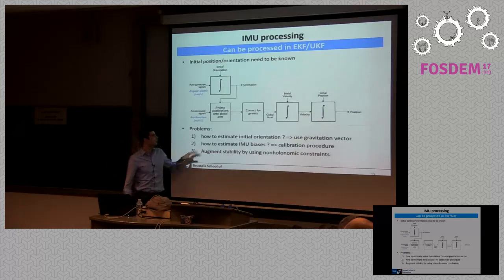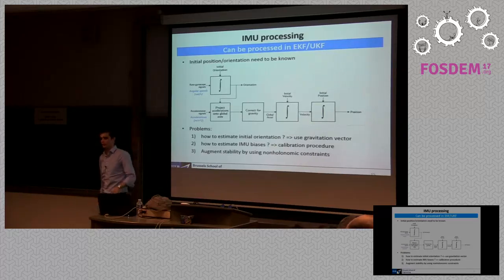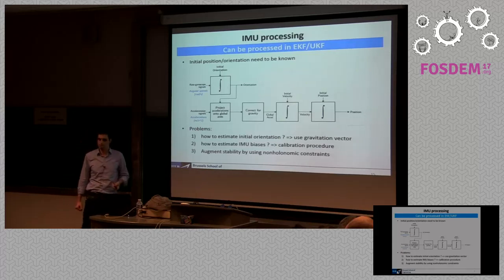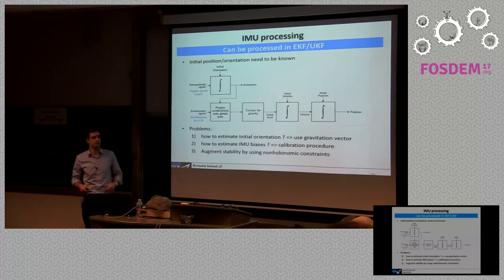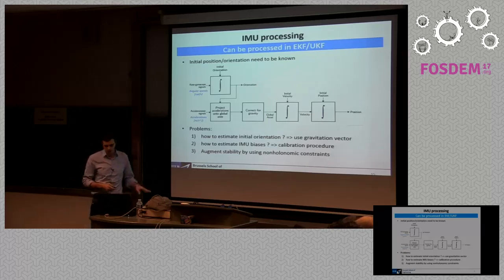Typical challenges in IMU estimation include determining initial orientation. As an order of magnitude, 0.1 degree of error results in about one meter of error after five seconds, and this error increases with the square of time. You need a calibration procedure. With a very good IMU you calibrate once every six months; with a poor one, you need to calibrate nearly every time you turn it on. There are tricks from the control community to improve IMU measurements, but we won't go into those details here.